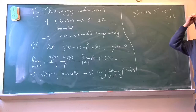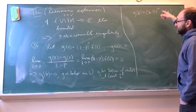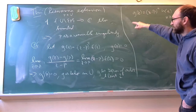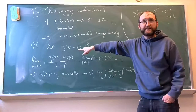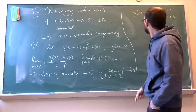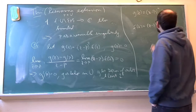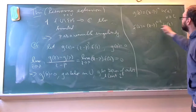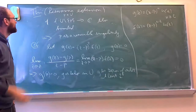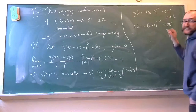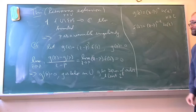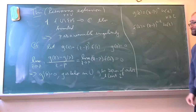Here h is holomorphic in U. Since k is at least two, I can divide by (z minus p) squared, so f(z) equals (z minus p) to the (k minus 2) times h(z), which is still holomorphic in U. This side was not defined at p a priori, but this expression is clearly holomorphic at p because k minus 2 is at least zero. So it's a removable singularity.